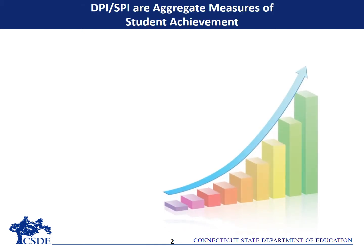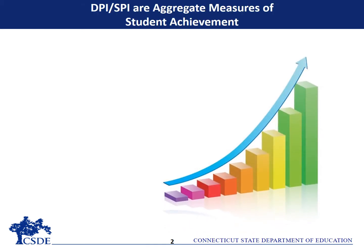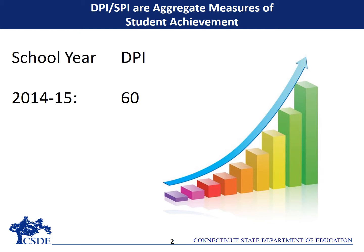In a nutshell, the DPI and the SPI are aggregate measures of student achievement. They tell us how well students are doing academically in a given school year.